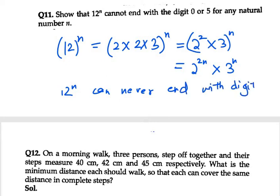If you want any number to end with 0 or 5 it must have a factor of 5 or 10. As you can see that 12^n doesn't have a factor of 5 or 10, therefore it cannot end with 0 or 5 at any natural number n.